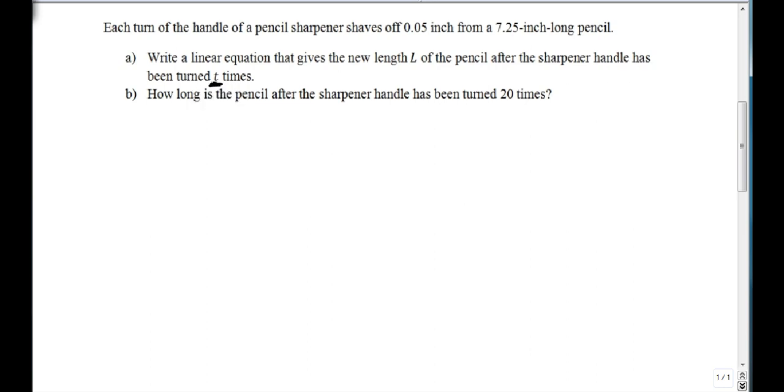So here is our number of times and here's how much comes off each time. So we're going to have minus 0.05t and it's getting shorter. It shaves off 0.05 inches every time I turn. But this started at 7.25, so we'll add 7.25 to it and we'll set this equal to L.